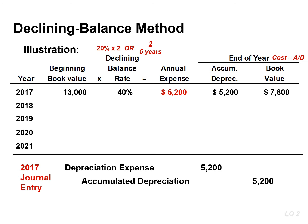Book value for the second year is $7,800. This is the difference between the cost of $13,000 and the accumulated depreciation at the beginning of the year, or $5,200. The depreciation rate is 40%, so the depreciation expense in year two is $3,120. This is found by multiplying the book value of $7,800 by the rate of 40%. Accumulated depreciation will increase by $3,120, and the book value will decrease by the same amount.